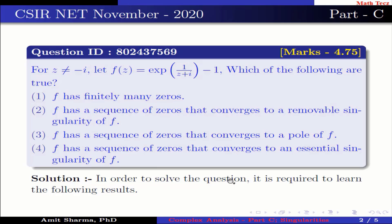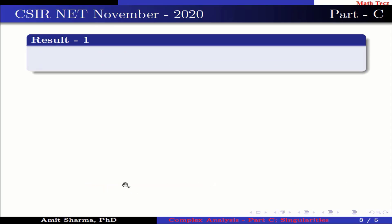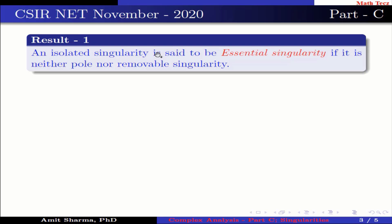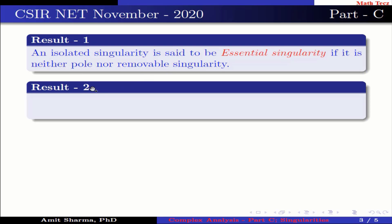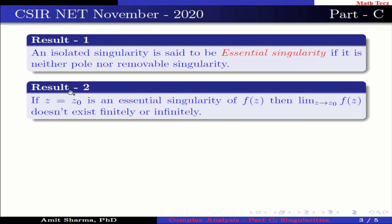In order to solve the question, it is required to learn the following results. Result number 1: an isolated singularity is said to be an essential singularity if it is neither a pole nor a removable singularity. Result number 2: if z = z₀ is an essential singularity of f, then the limit as z approaches z₀ of f does not exist finitely or infinitely.